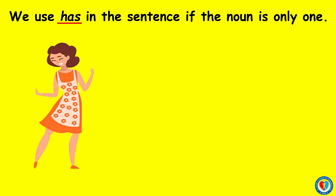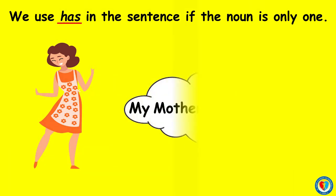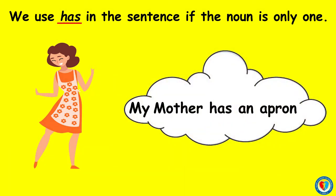Another example: my mother wears her apron. How many mothers do you see? Correct! She's only one. That means we are going to use has. My mother has an apron. We use has because mother in this picture is only one.